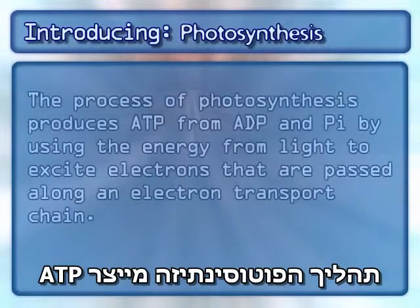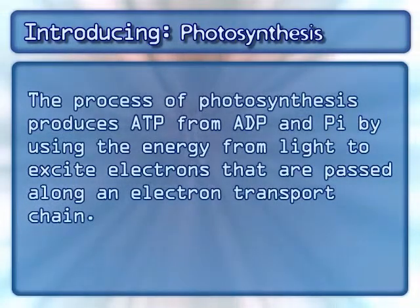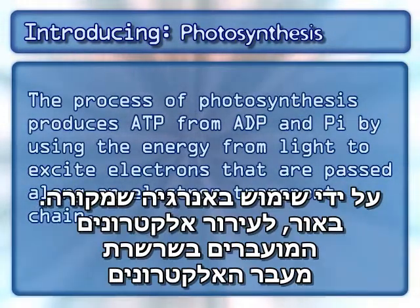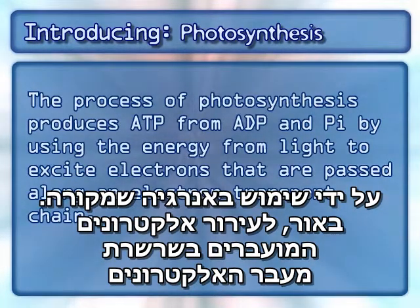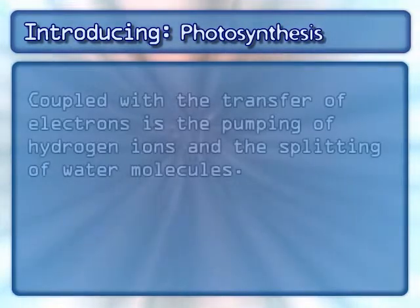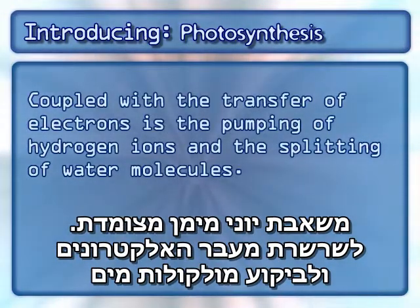The process of photosynthesis produces ATP from ADP and PI by using the energy from light to excite electrons that are passed along an electron transport chain. Coupled with the transfer of electrons is the pumping of hydrogen ions and the splitting of water molecules.